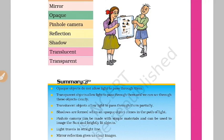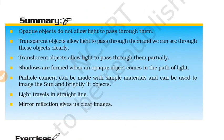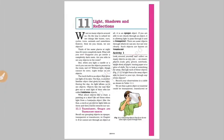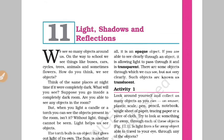To summarize this unit: we covered shadows, translucent and transparent objects, luminous objects, the pinhole camera, reflection, and refraction. This is 6th Standard content that forms the foundation for advanced 10th Standard topics. You can download this book and watch the related videos to understand better. This is a unique class — thank you.